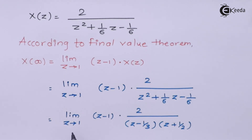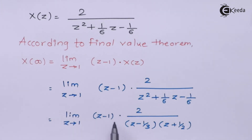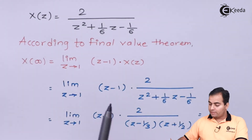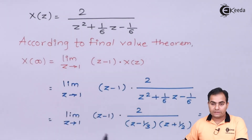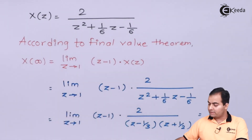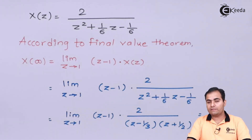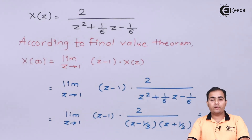After substituting the limit Z tends to 1, Z is replaced by 1 and (1 − 1) becomes 0, and 0 into anything is 0. So the final value of X(Z) is 0. This is the solution: we have calculated both the initial value and the final value, and in both cases the result is 0.